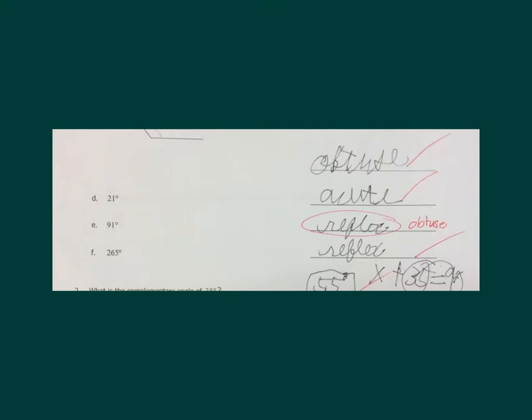More than 180 but less than 360, so it's a reflex. So don't be confused: 91 is bigger than 90 and less than 180. Okay? You understand?